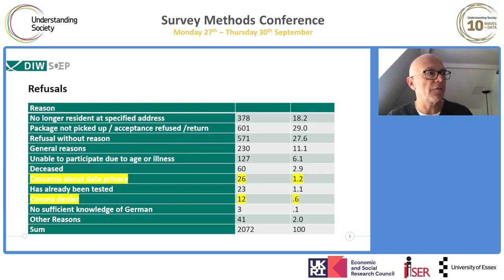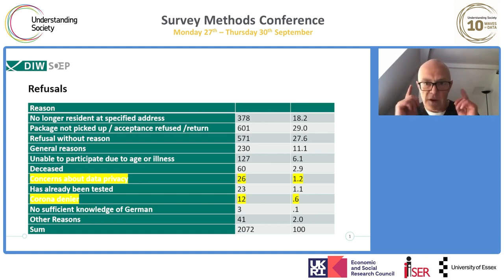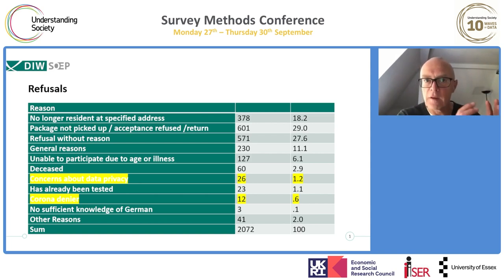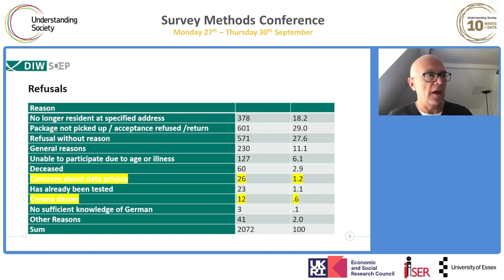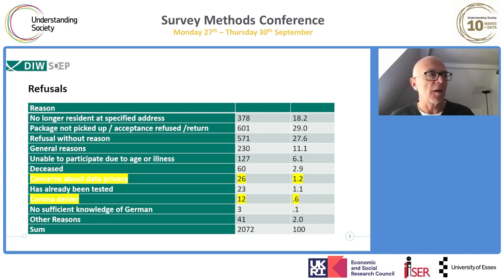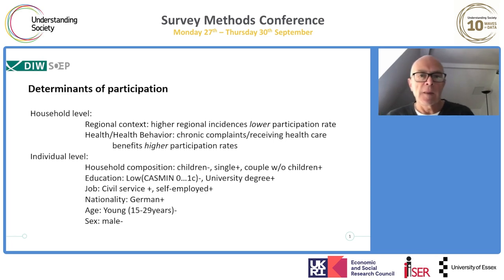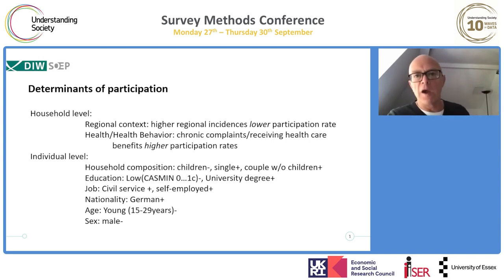Looking at refusals, we see only very low numbers concerning data privacy concerns. It is important to note that these are the reasons given by those we had contact with — around 46% of our sample had no contact at all. We also see a very low number of corona deniers among refusals. Using information from earlier waves — 2018, 2019 — we can identify the determinants of participation.